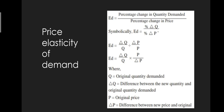Let's look at the formula. Elasticity of demand equals percentage change in quantity demanded upon percentage change in price. Symbolically, Ed = percentage change in Q upon percentage change in P.